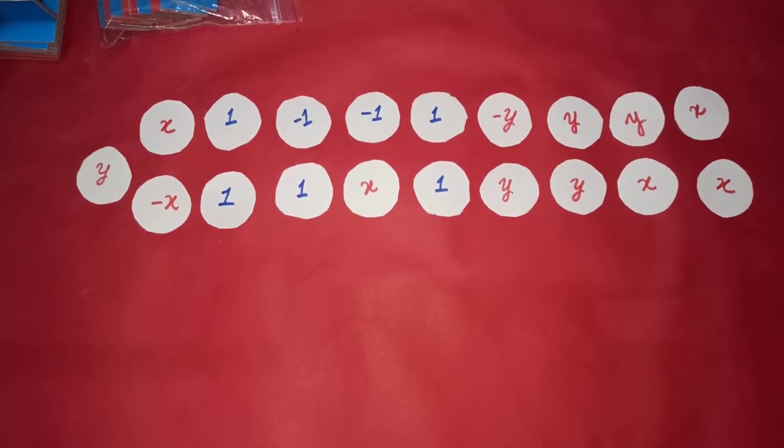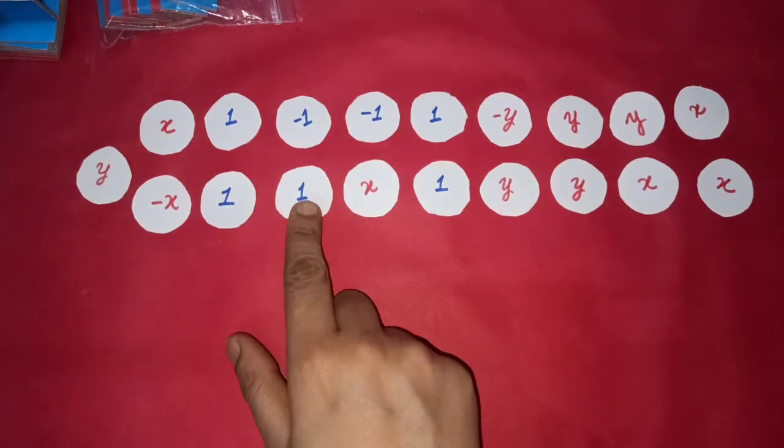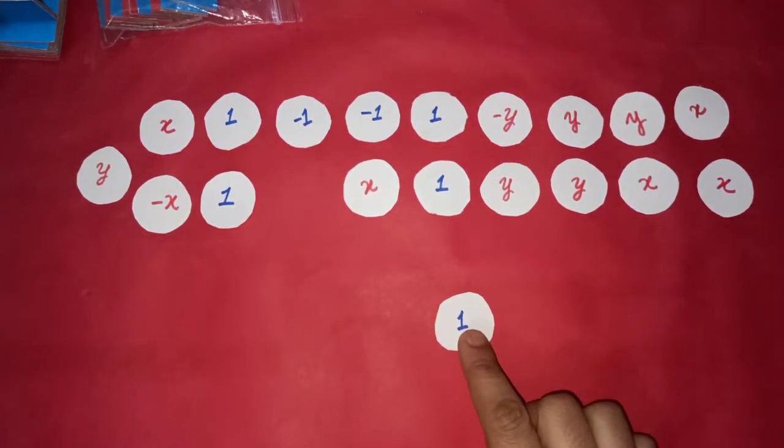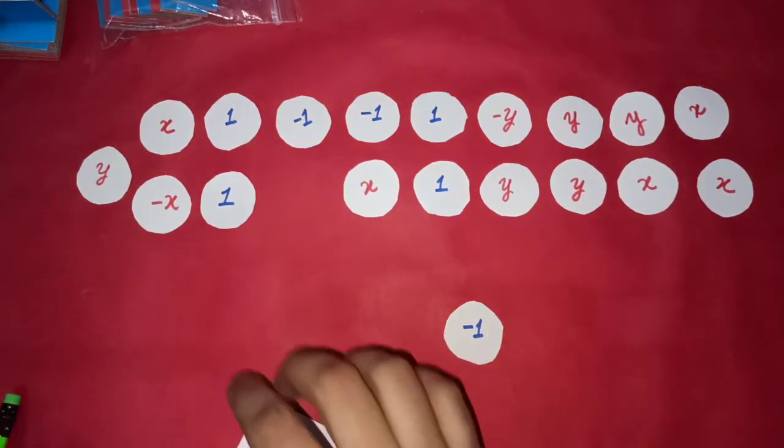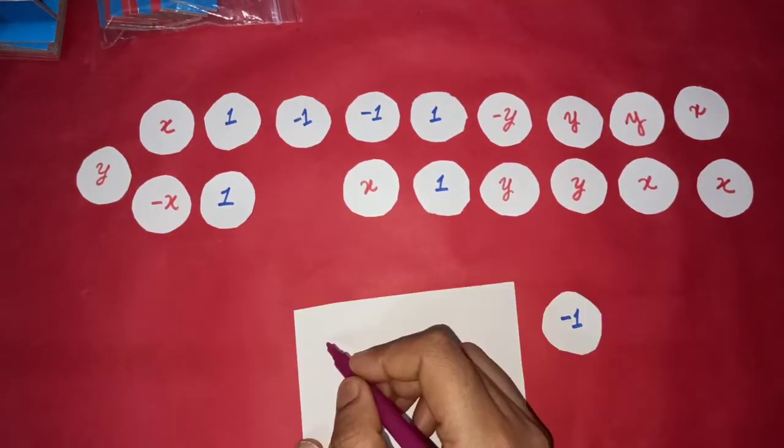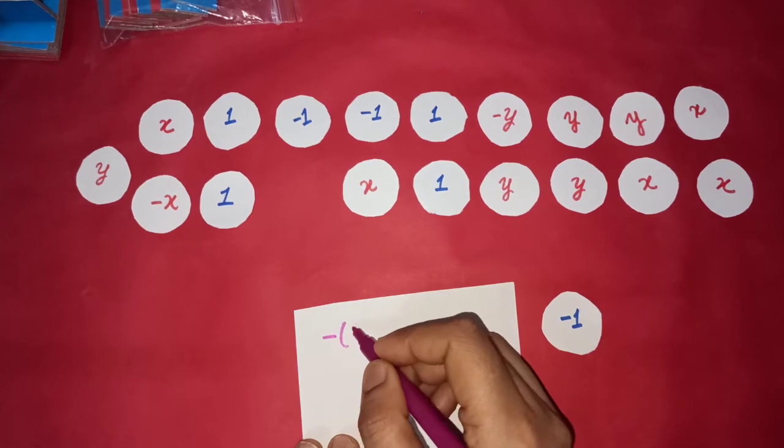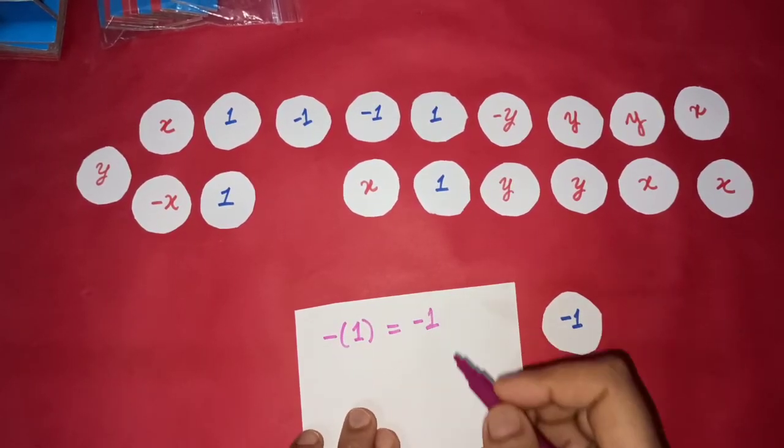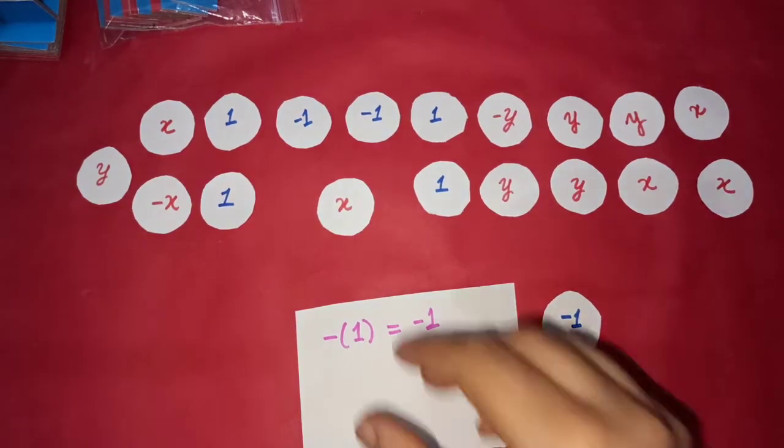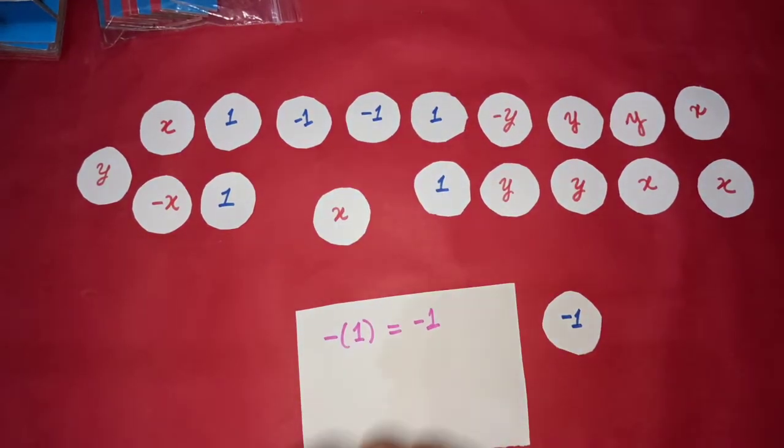In order to understand subtraction, we first need to define certain things. Like if I take a tile or coin of 1, this is positive 1. If I flip it, I get a negative 1. So on paper it would be written as negative of positive 1 is equal to negative 1. Same way we can do for other variables also.